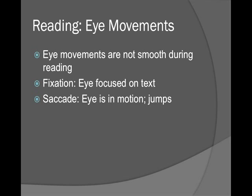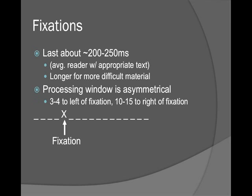Starting with fixations: they usually last 200 milliseconds — a fifth to a fourth of a second — for an average reader with average-level text. We fixate more and longer for difficult material. So for a scientific article, the longer the words or the more difficult the concepts, the longer we fixate.